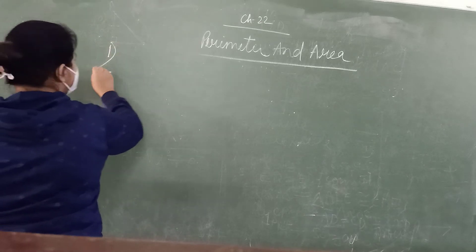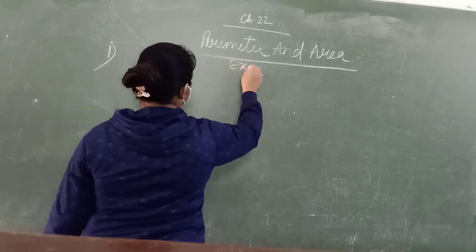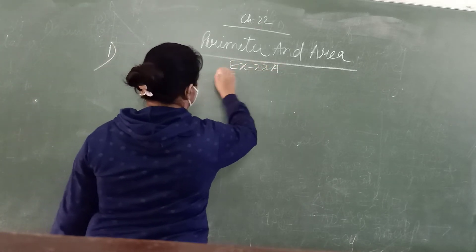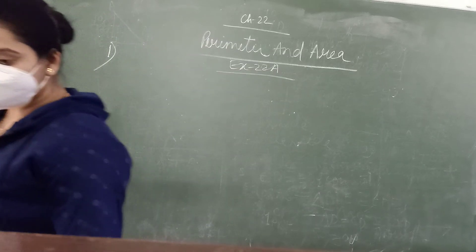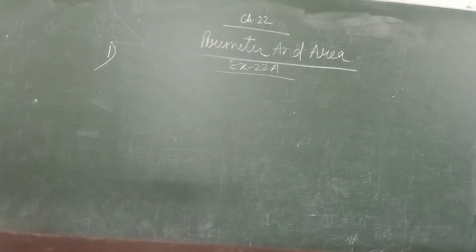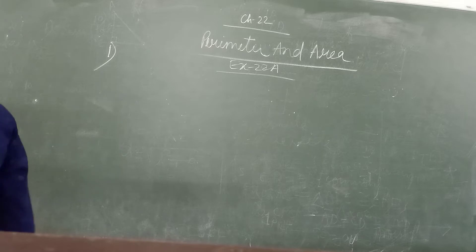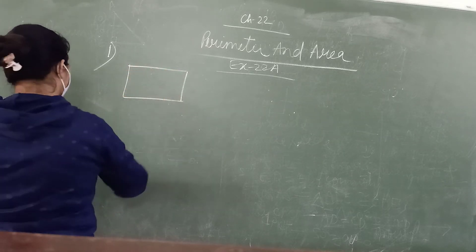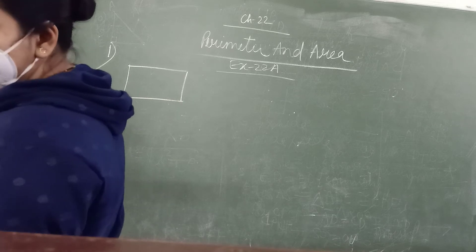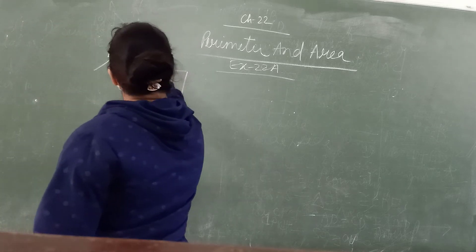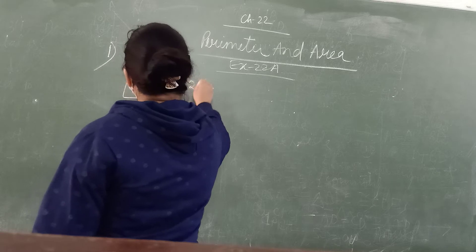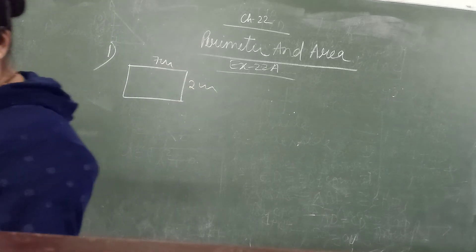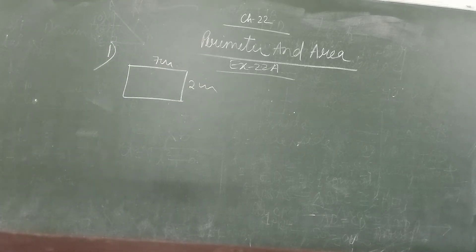The first question is Exercise 22A. We have a number of figures here — three figures are given. I am going to explain the first one. This is the rectangle whose length is 7 centimetres and width is 2 centimetres. Find the perimeter and the area of each shape.